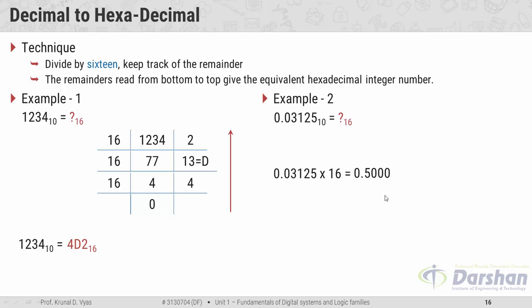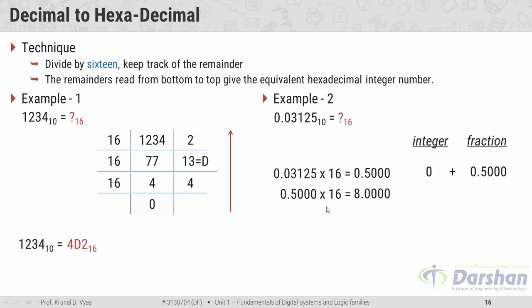For the fractional part example, we multiply the decimal fraction by 16. Splitting the result into integer and fraction gives integer 0 and fraction 0.5. Repeating until the fraction reaches 0, we write the integer parts from top to bottom and place 0-point in front. The answer is 0.08 in hexadecimal.